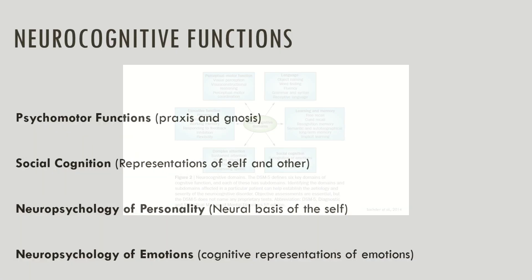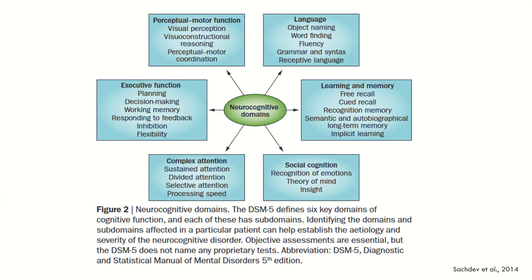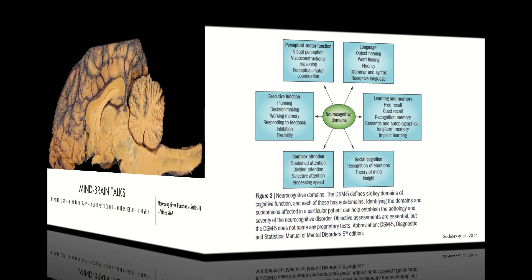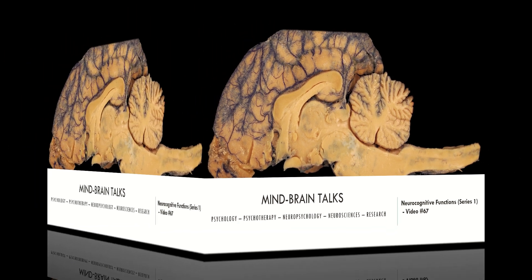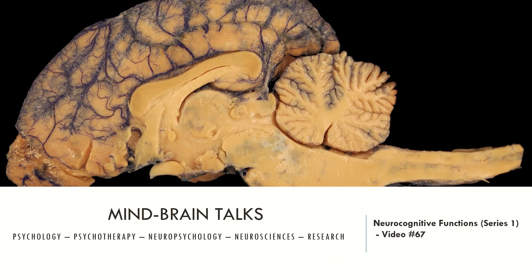Here is a diagram that may help you understand other neurocognitive functions that were not described here. These neurocognitive domains were also described in the DSM-5. We can see the perceptomotor function, language, learning and memory, social cognition, complex attention and executive functions. As you are seeing here, some of the neurocognitive processes are rearranged in a different manner. The following videos will be dedicated specifically to each neurocognitive domain, where I will describe more deeply the specificities of each.